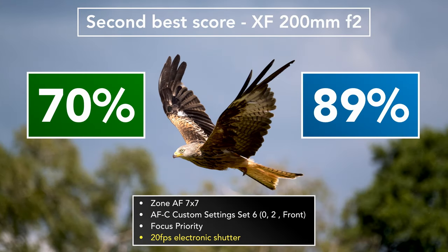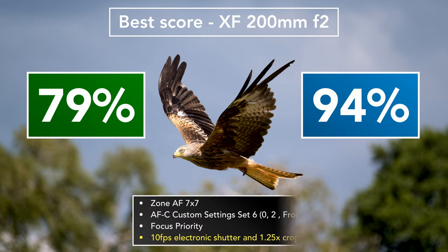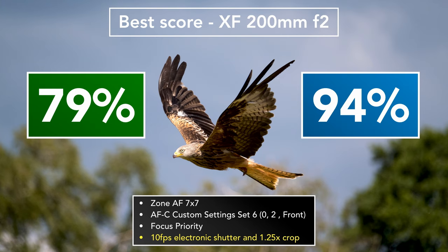With the 200mm I concentrated on images with the kites flying close with a busy background. The second-best score was 70% and 89%. The highest score I achieved with the 200mm was 79% and 94% — the highest score I've ever gotten with any Fujifilm camera and lens photographing red kites. Notably, it was the 1.25x crop mode with the electronic shutter that gave the best result. Having a better keeper rate with the 1.25x crop is not new to me — it was the same conclusion when I tested the X-T3 two years ago — but curiously it didn't make a difference when using the X-T4 with the 100-400mm.